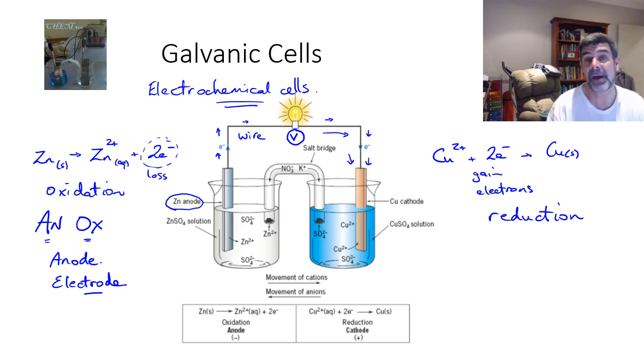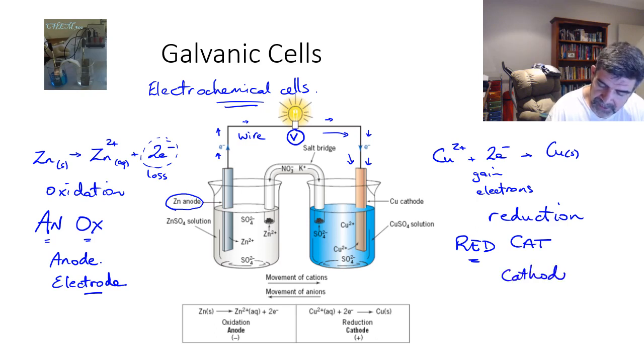And as we remember AN OX, we must also remember about our RED CAT. RED CAT tells us that reduction occurs at the cathode. The cathode is also an electrode. The cathode is the place where reduction occurs. So in this case, we have a copper cathode and we have a zinc anode.